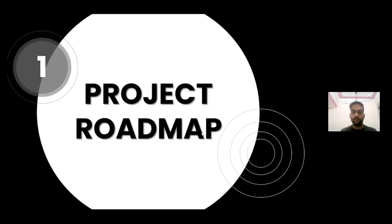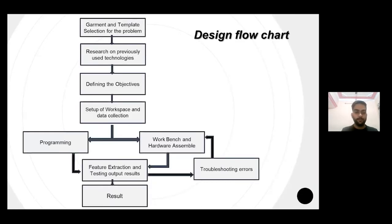After the introduction and need, here we are with the slide of the project roadmap. In the subsequent slides, we will tell how we have developed the project. The very first flowchart is the design flowchart. In the above flowchart, the work has been divided into several categories.